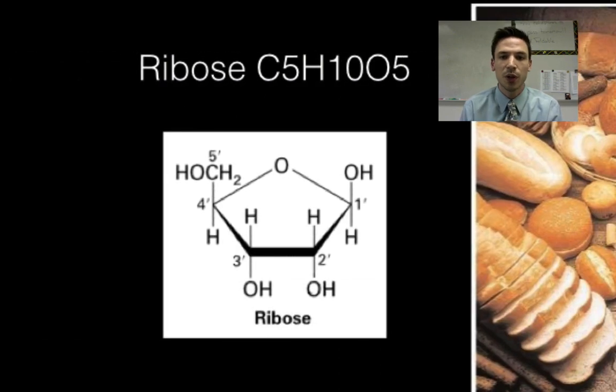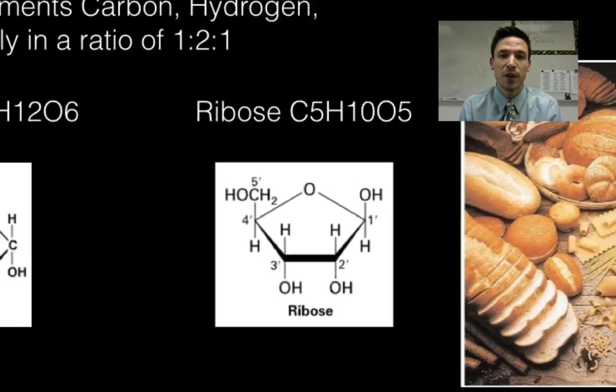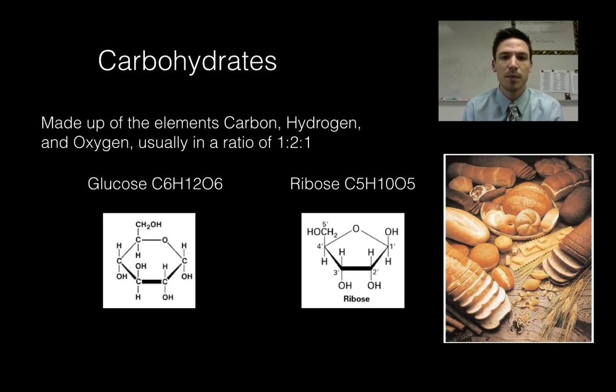Ribose is another example, another sugar. There are five carbons so therefore twice as many would be 10 hydrogens and five oxygens. So we get C5H10O5. So one thing that most carbohydrates have in common, again made up of carbon, hydrogen, oxygen, usually in a ratio of one to two to one, twice as many hydrogens as there are carbons and oxygens.